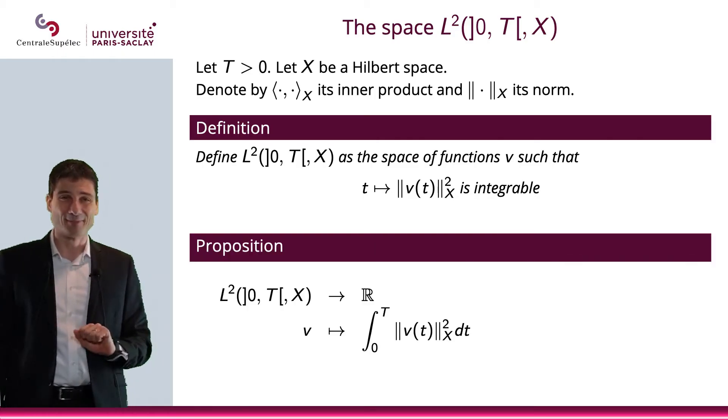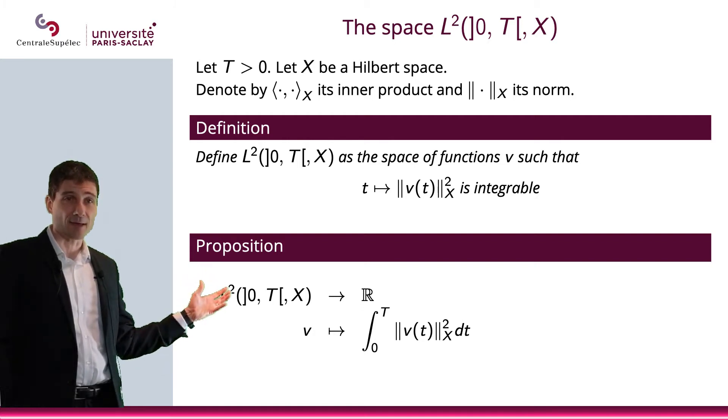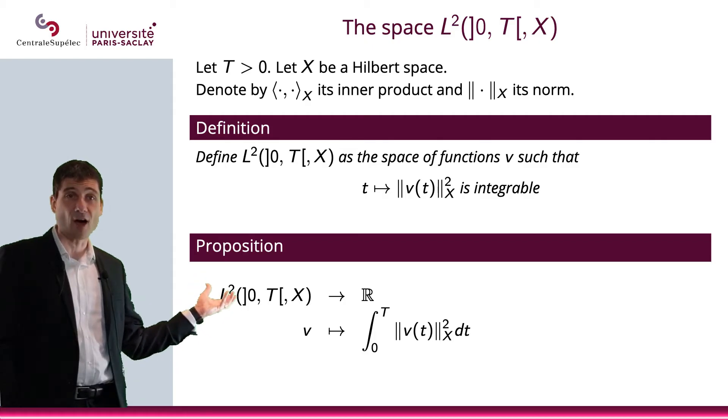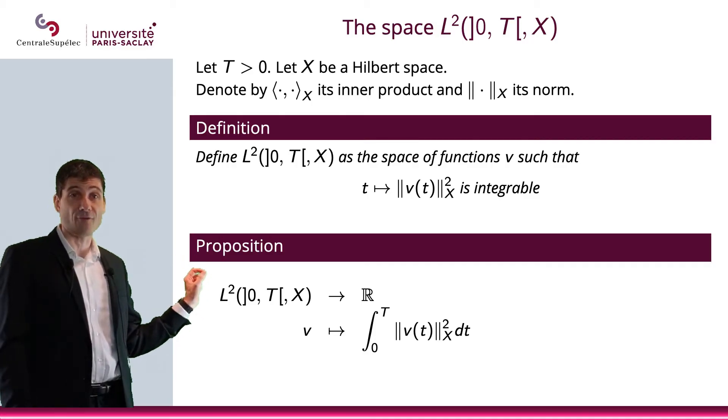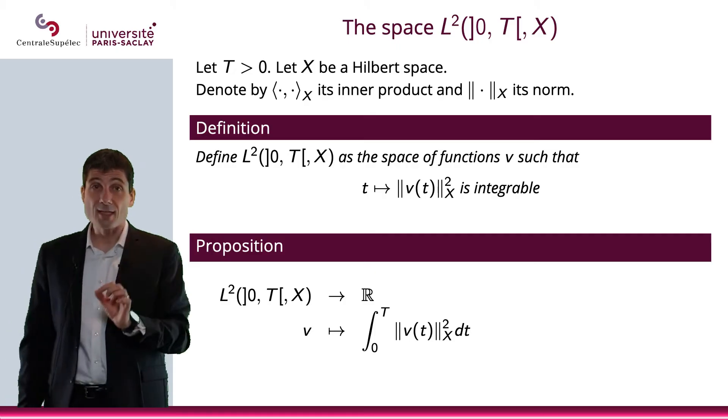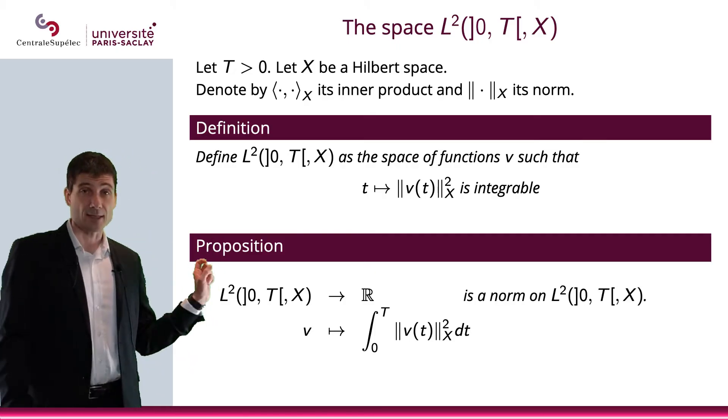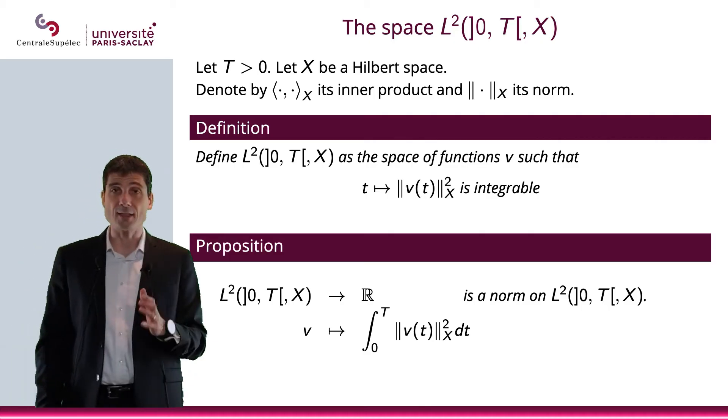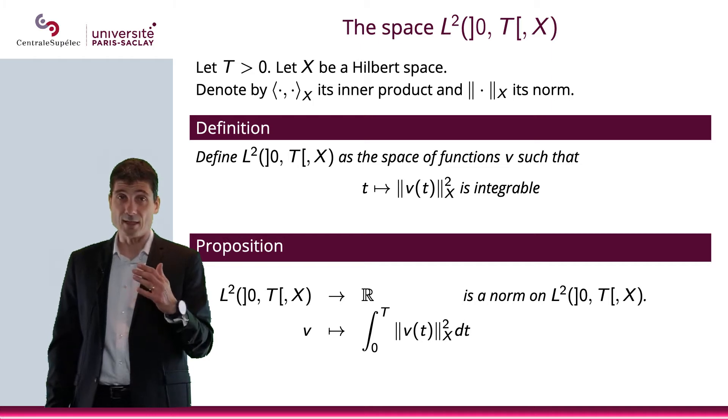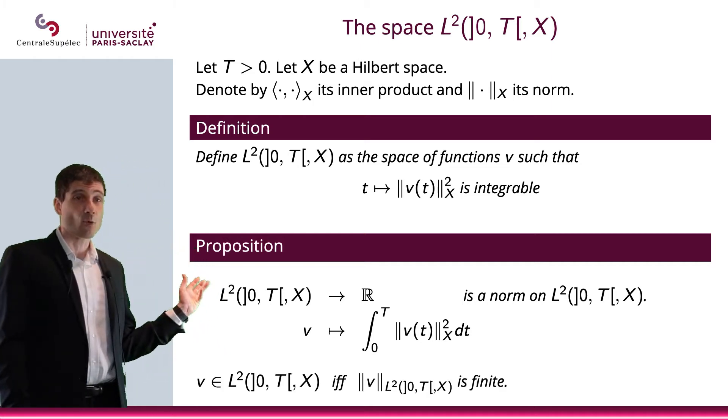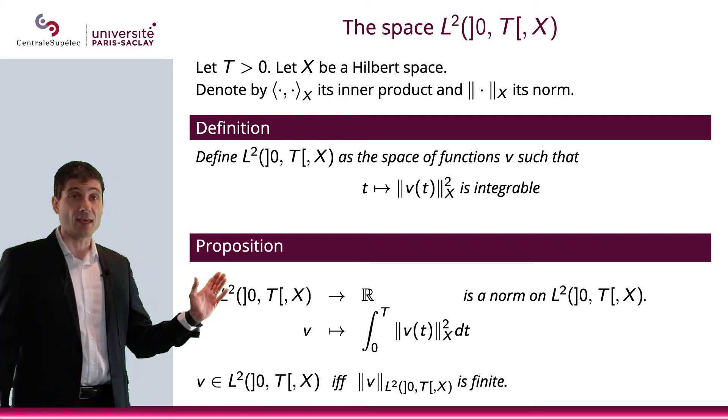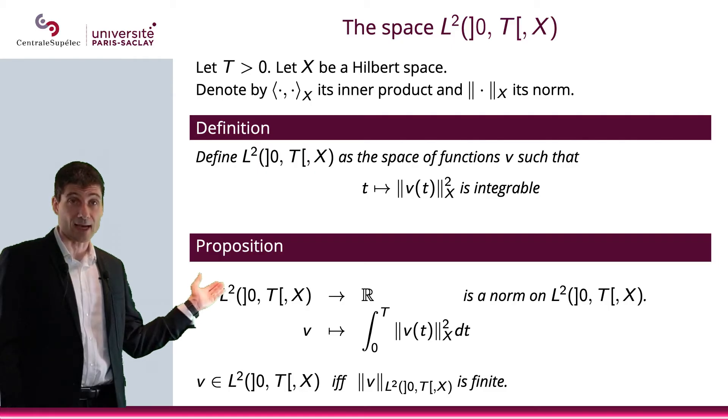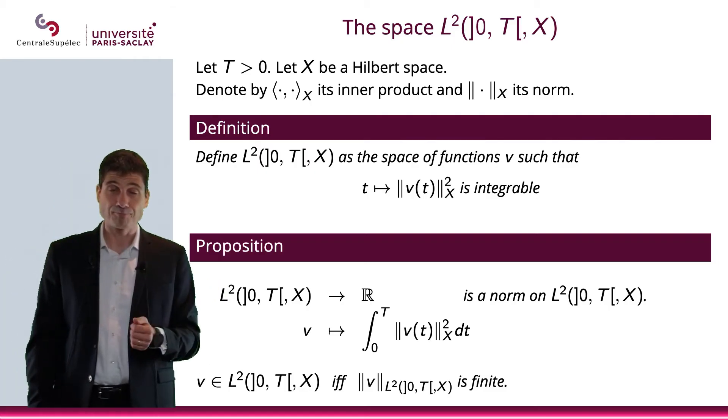Okay. Let me give you a proposition now. If I consider the application, the mapping, that goes from L²(0,T,X), the space I just defined, to R, that associates to v the integral between 0 and capital T of the norm of v(t) in X squared, well, this happens to be a norm on this space L²(0,T,X). And you can verify this. It's not very complicated to prove that it is a norm. Furthermore, what we have is that we have an equivalence between v is in this space L²(0,T,X) and the norm in that L²(0,T,X) norm is finite.